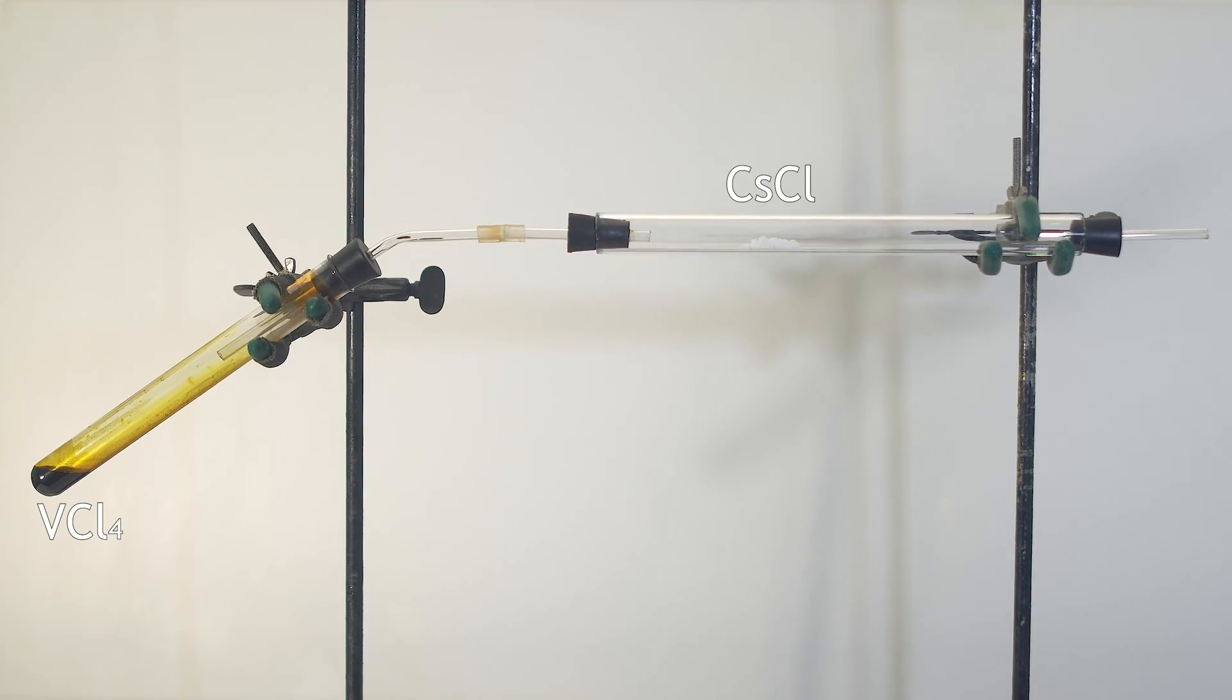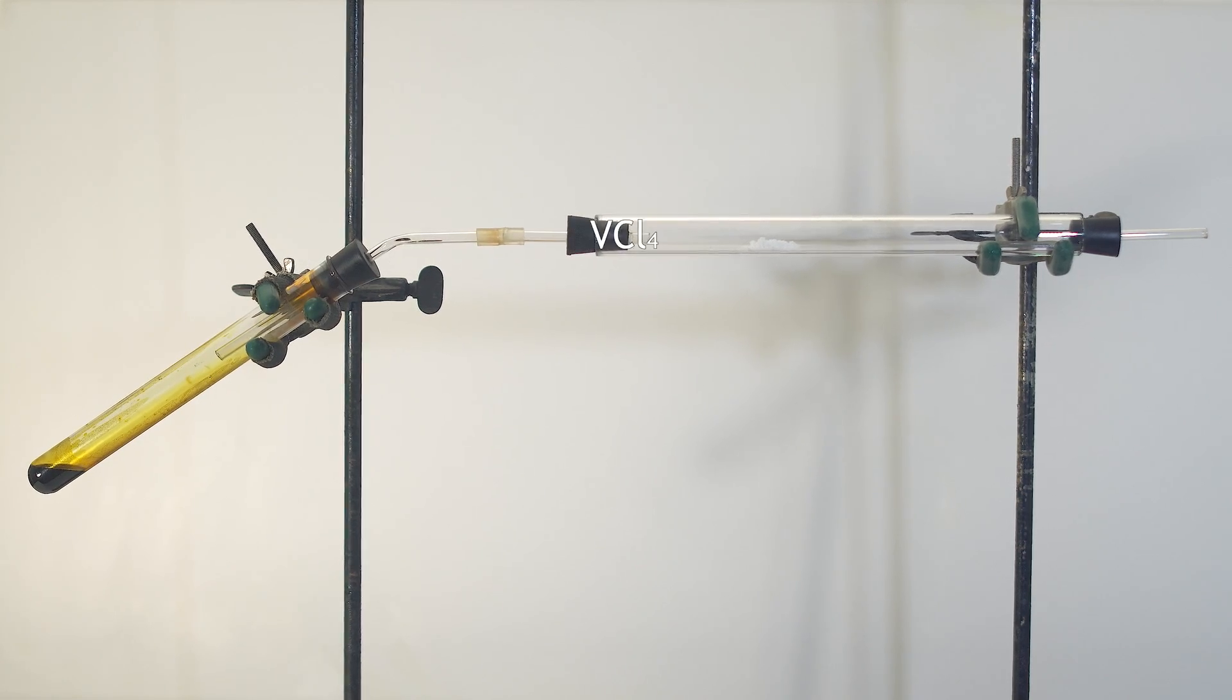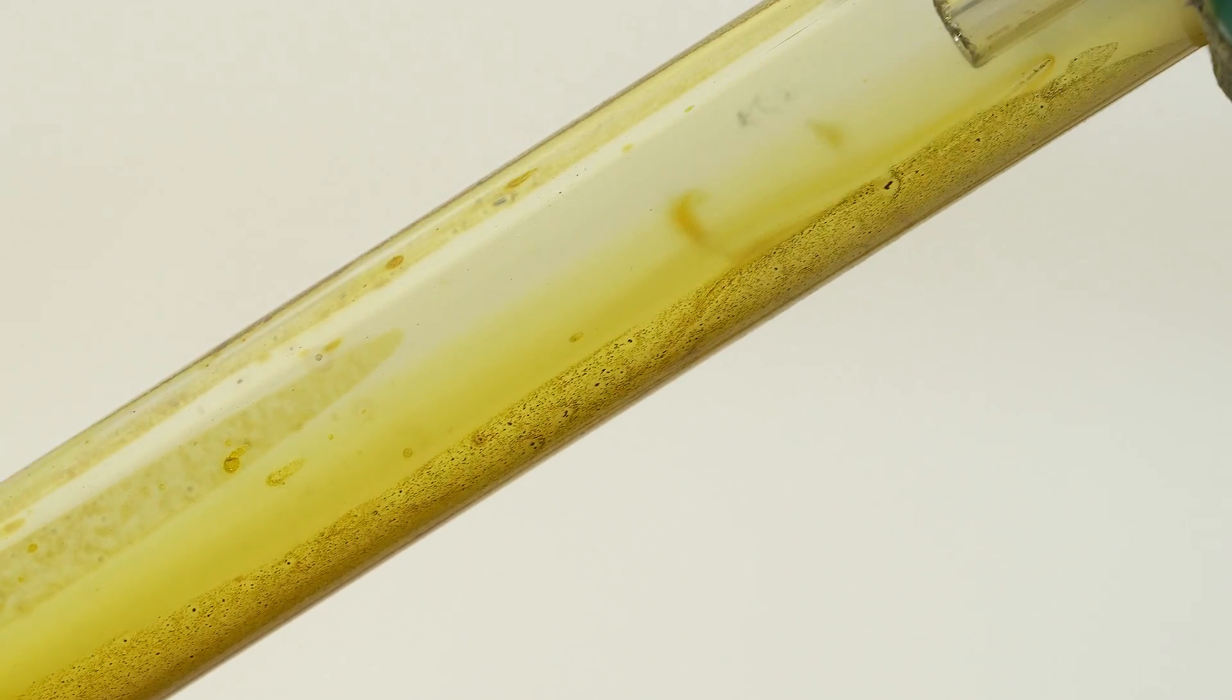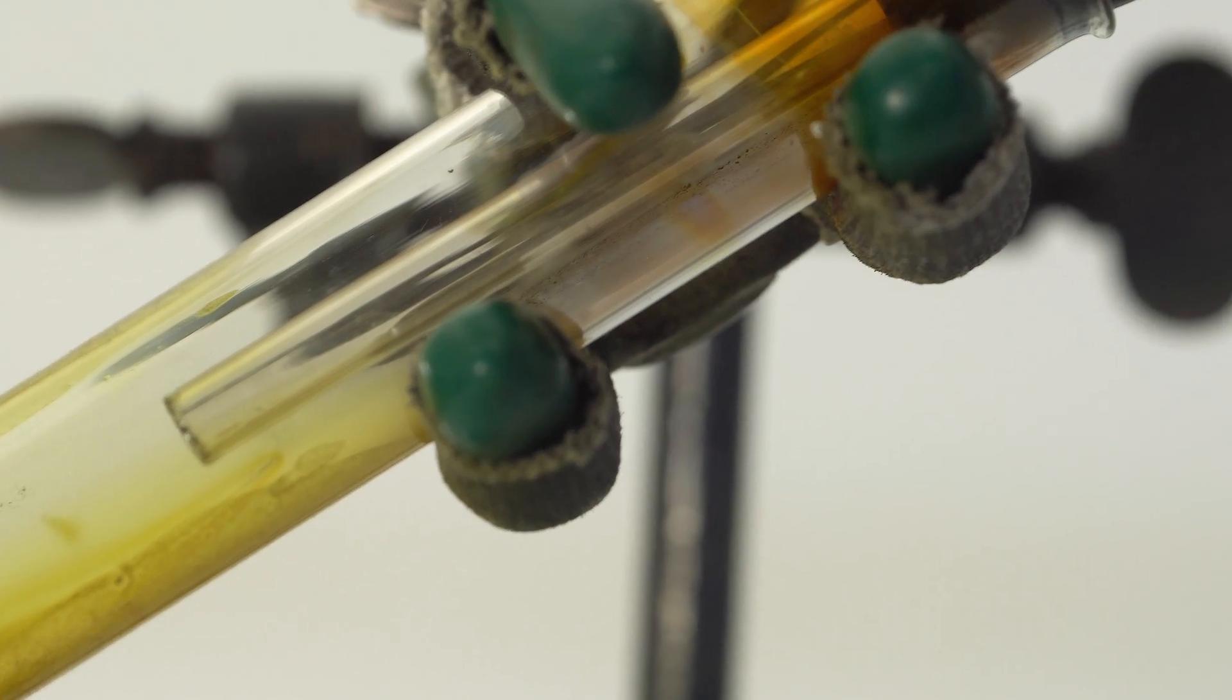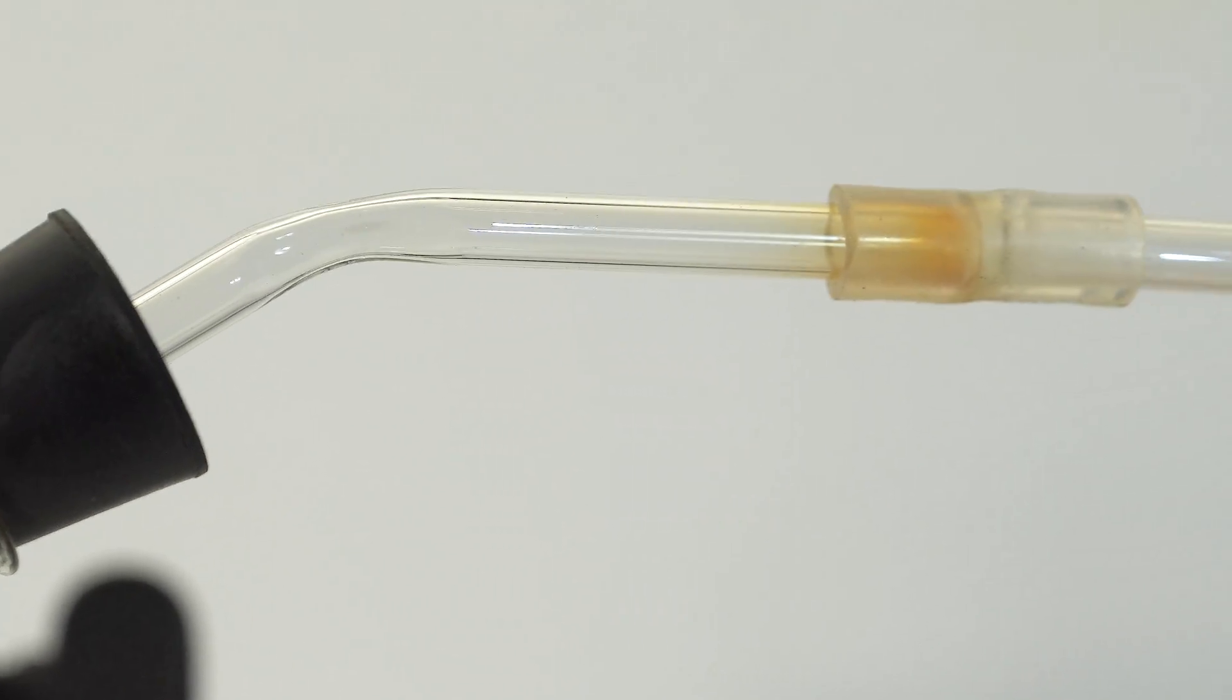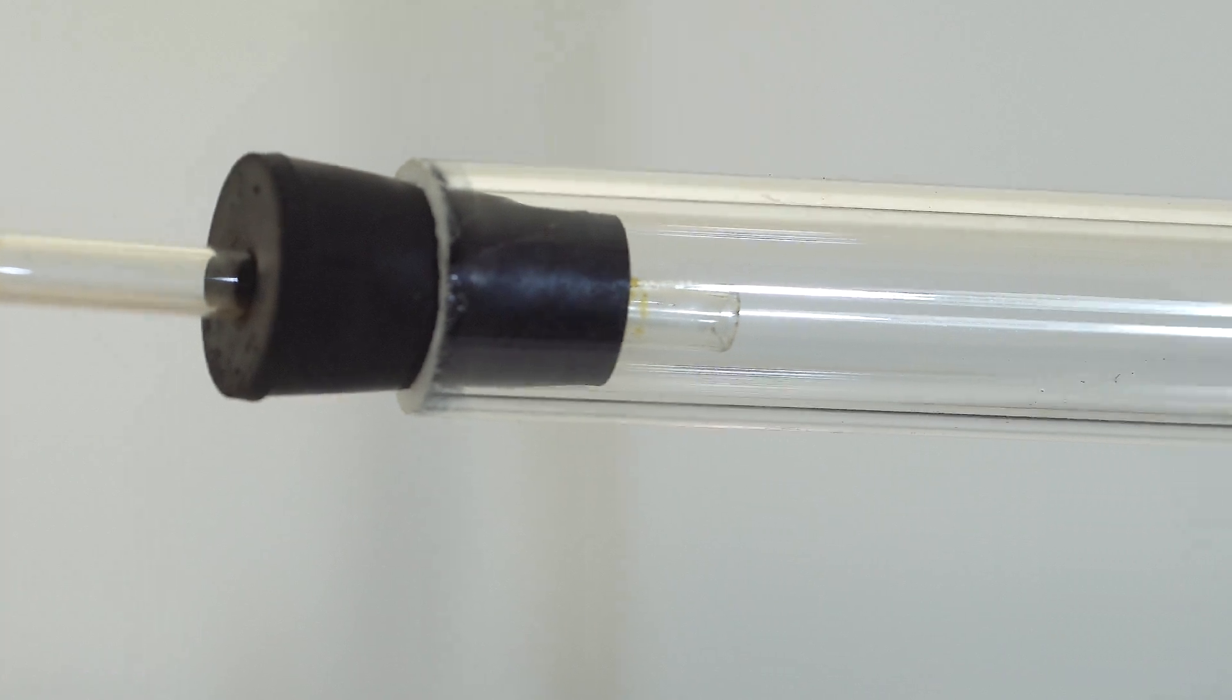Passing vanadium tetrachloride vapor over molten caesium chloride results in purple caesium hexachlorovanadate. I assembled a simple setup from a test tube in which I placed vanadium tetrachloride and a glass tube with caesium chloride. Vanadium tetrachloride vapor reacts with heated caesium chloride to form purple vanadium salt.